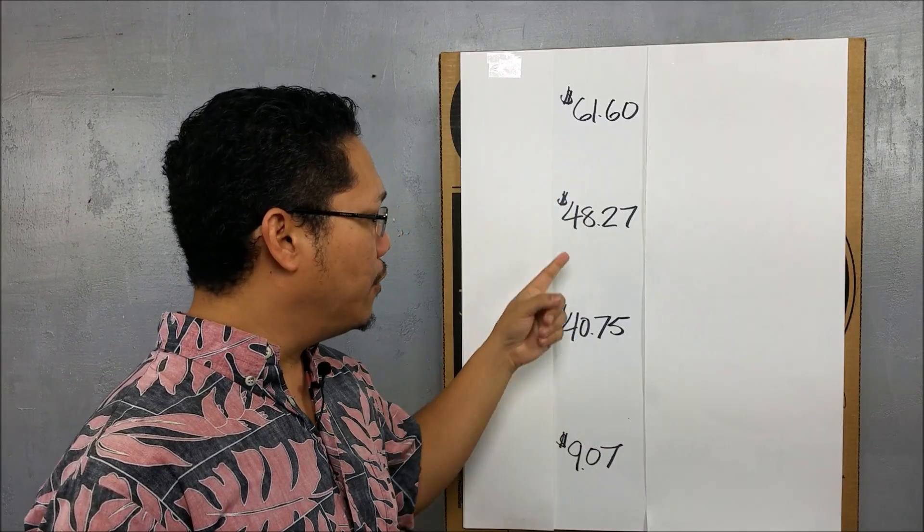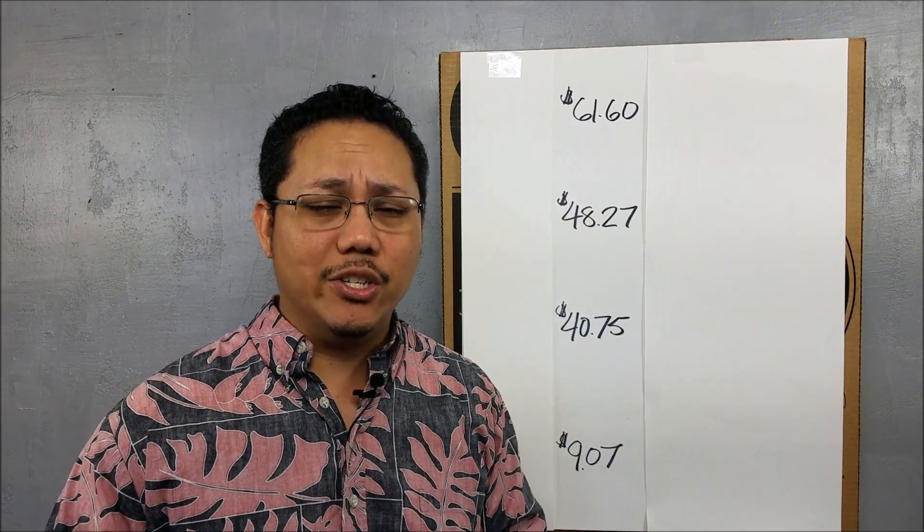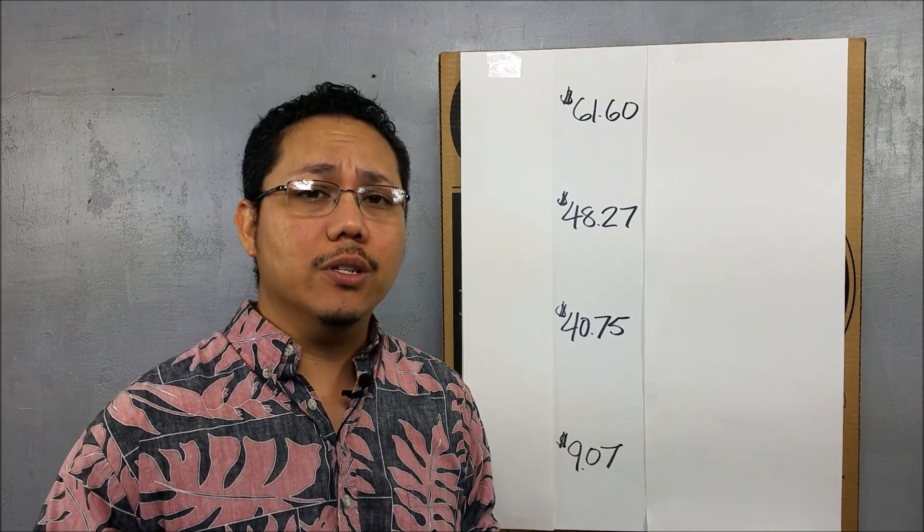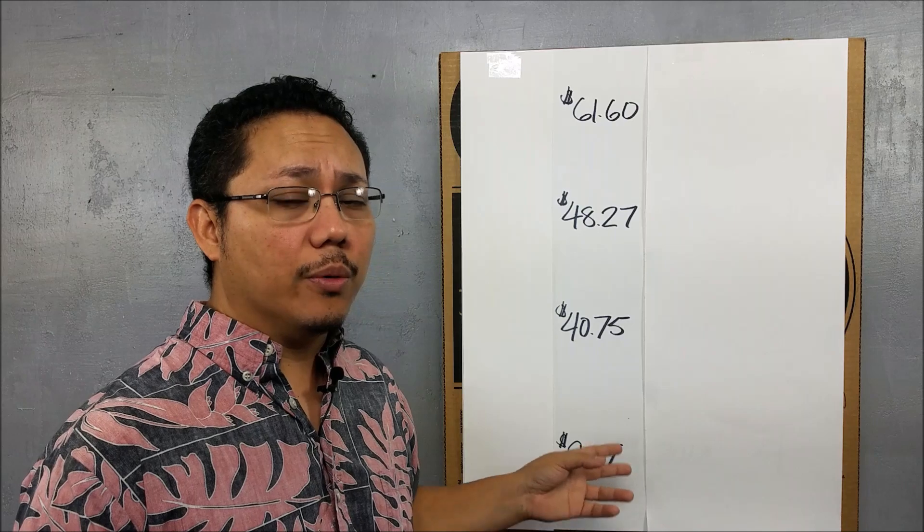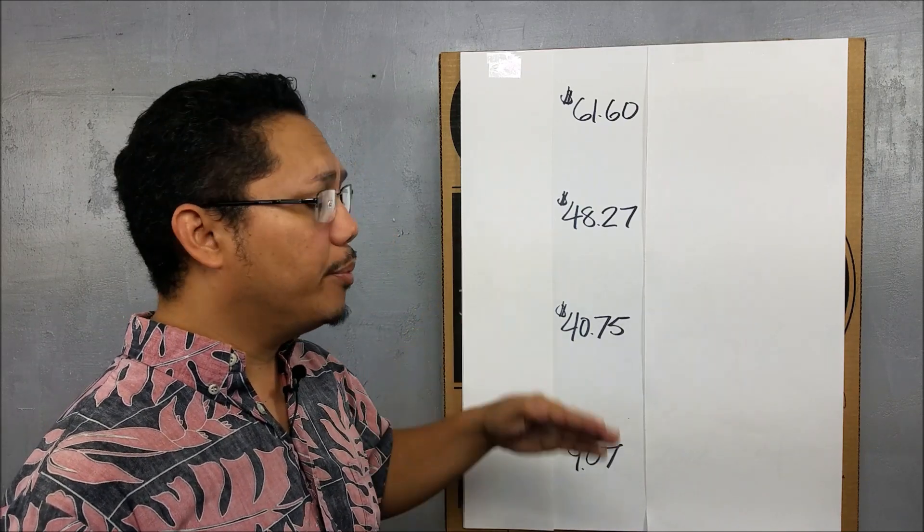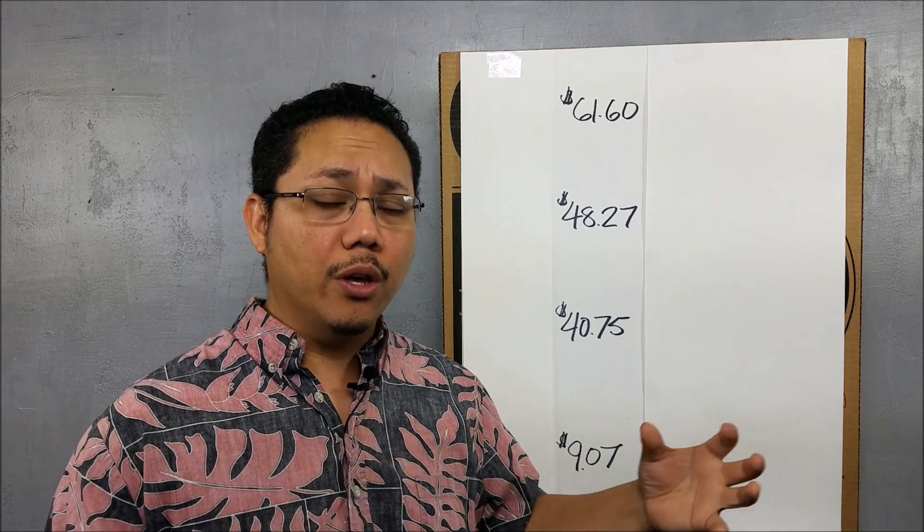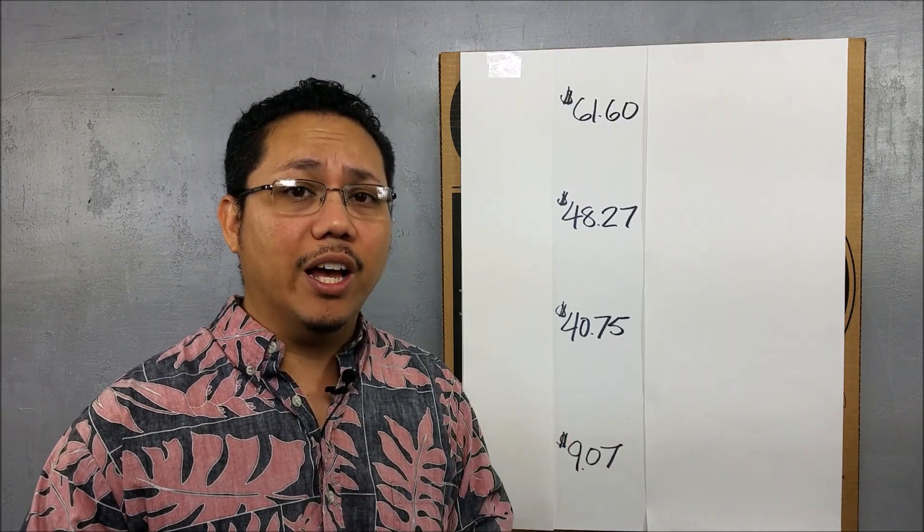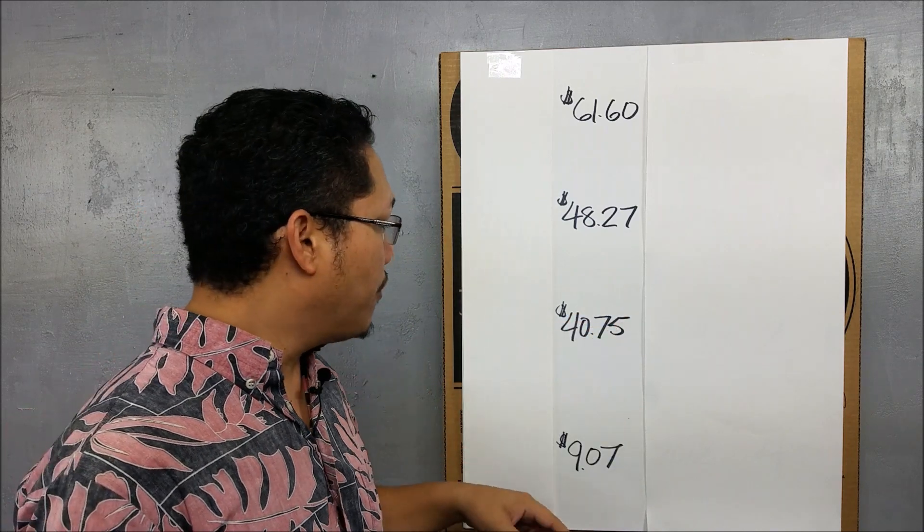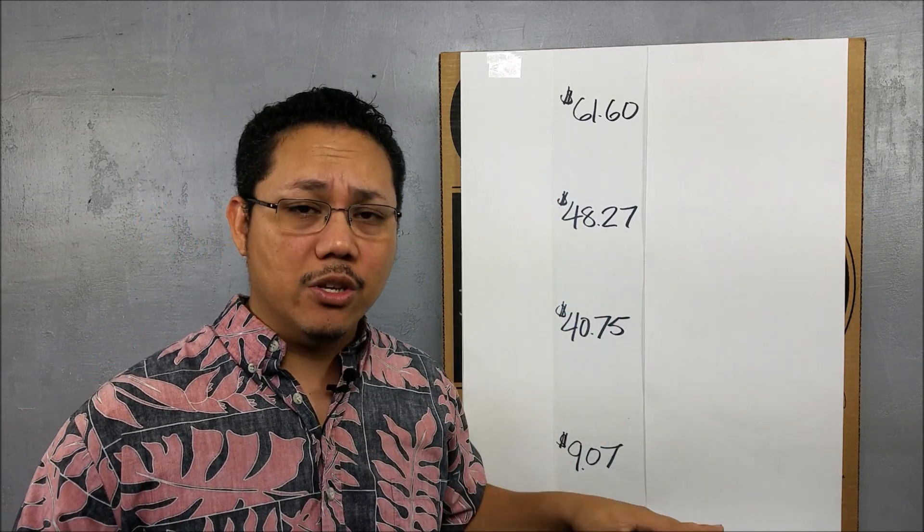Alrighty then, each of these four numbers here represents how much each carrier is worth on the stock market as of February 14th, 2017. Now these numbers are important because it is a direct reflection on how much each carrier can put back into their network growth, coverage, speed, and reliability. Alright, so we got AT&T, Sprint, T-Mobile, and Verizon somewhere in this mix.